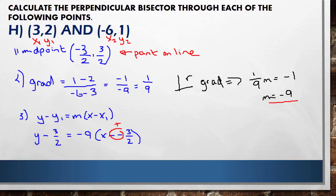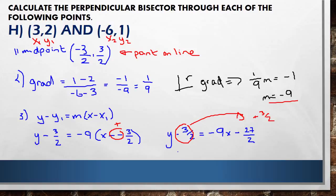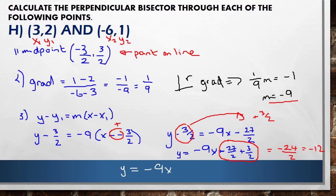The minus minus here gives a plus, so y minus 3/2 equals minus 9x minus 27/2. Bringing 3/2 over to the other side — it becomes plus 3/2 — we have y equals minus 9x minus 27/2 plus 3/2. Minus 27 plus 3 gives minus 24 over 2, and minus 24 divided by 2 gives minus 12. So the final answer is y equals minus 9x minus 12.